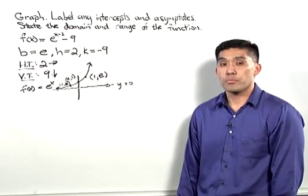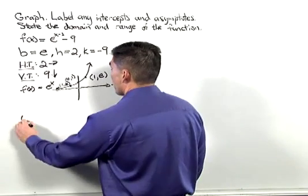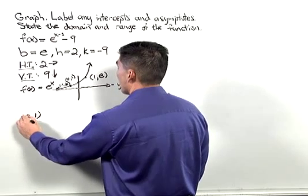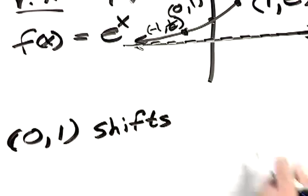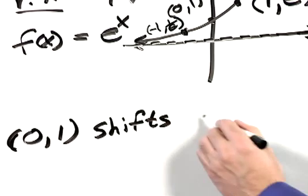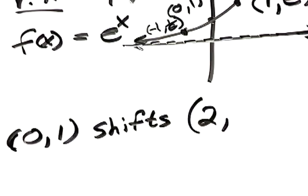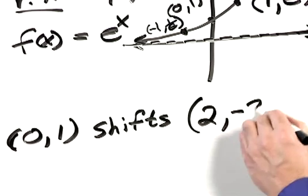Let's first shift those points. The first point we're going to shift is 0 comma 1. If we move it 2 units to the right, the x-coordinate is 2, and if we move it 9 units down, the y-coordinate is negative 8.